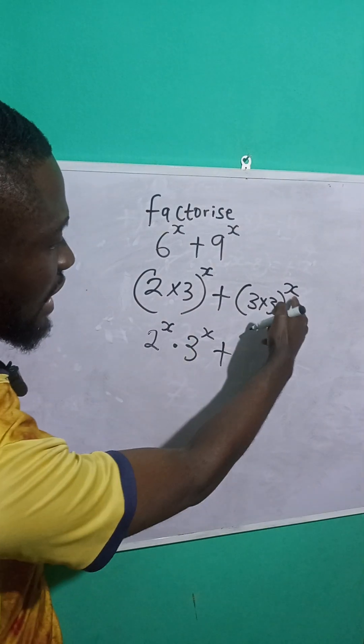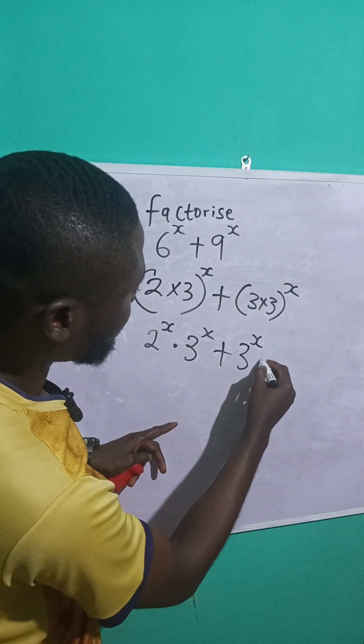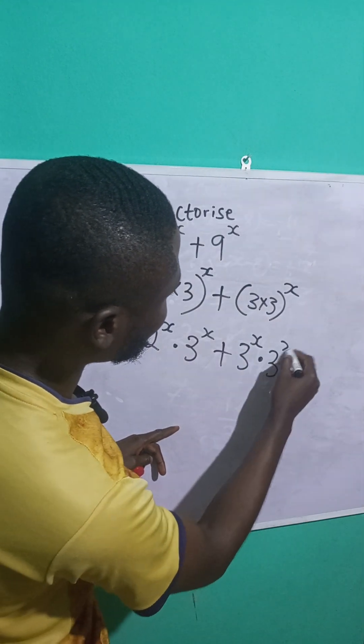Plus, this x now, I will also distribute it to 3 and 3. So, 3 raised to the power of x multiplied by what? 3 raised to the power of x.